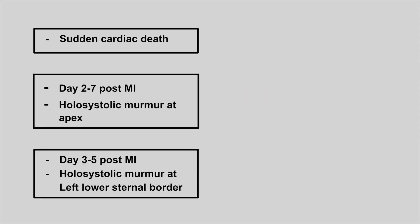Next, we will cover the complications of MIs. The first is sudden cardiac death right after an MI — this is ventricular arrhythmia; a common example is V-fib.